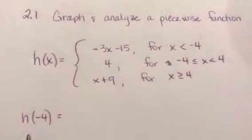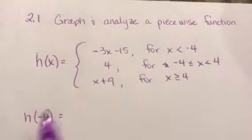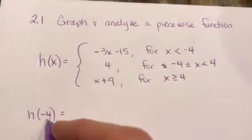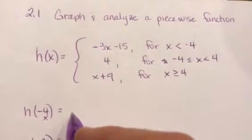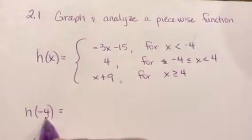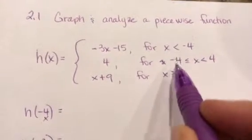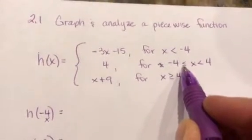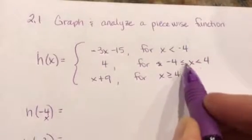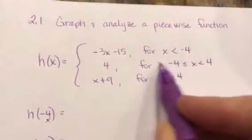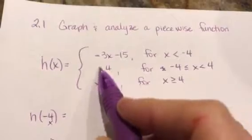So the very first thing it asked me was h of negative 4. This in here is always your value of x. What comes out is going to be your y value. So my x is negative 4, and you might say, which piece do I use? You can only use one piece. Well, here's where it can equal negative 4. So I'm going to use this piece, and it says, if you're going to use this one, then your y value is always 4.